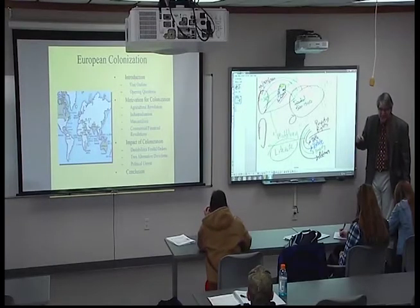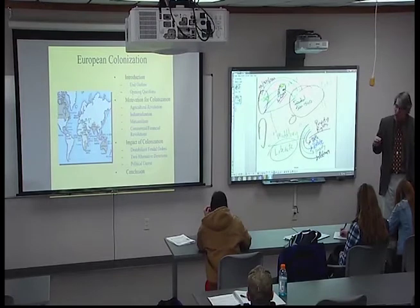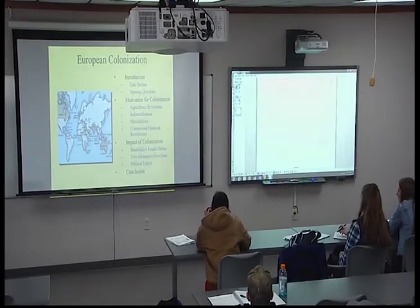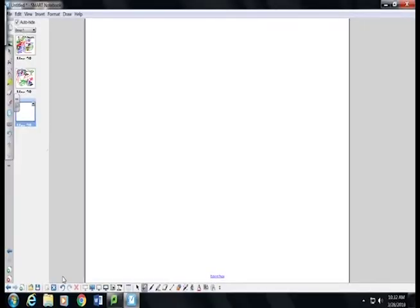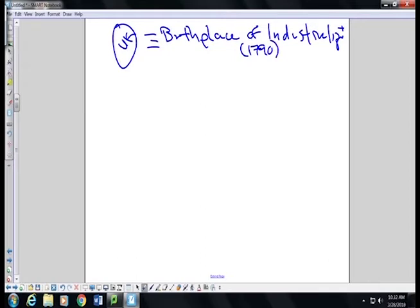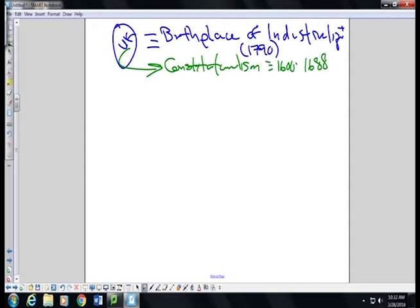The discussion today is industrialization. There is a connection between industrialization and the Enlightenment. I would argue that the reason why England becomes the birthplace of industrialization — and industrialization does not come around until the 1790s — is that England had already done the constitutional revolution between 1600 and 1688, so that this constitutionalism leads to industrialization.